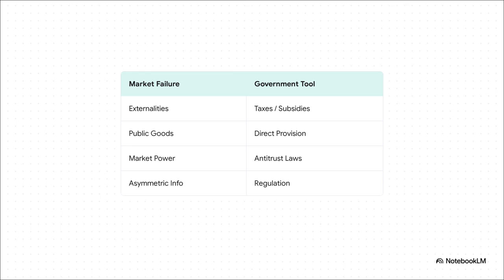If the problem is a negative externality like pollution, the government can use something called a Pigovian tax to make polluters pay. If it's a public good like a lighthouse, they can just provide it directly. If a company has too much market power, they can use antitrust laws to break it up or regulate it. And if the issue is asymmetric information, they can create rules that mandate transparency, like lemon laws for used cars.